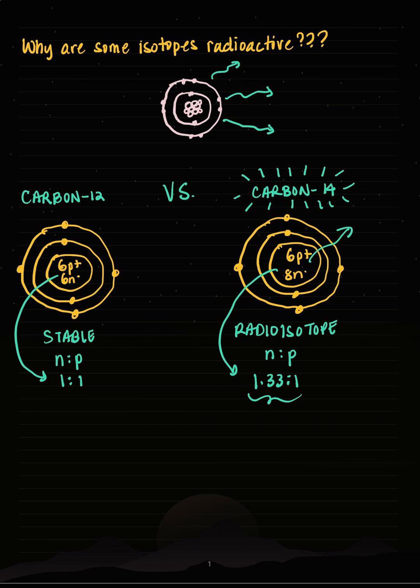So the nuclear decay process that carbon 14 undergoes is called beta decay. We can talk about that in another video.